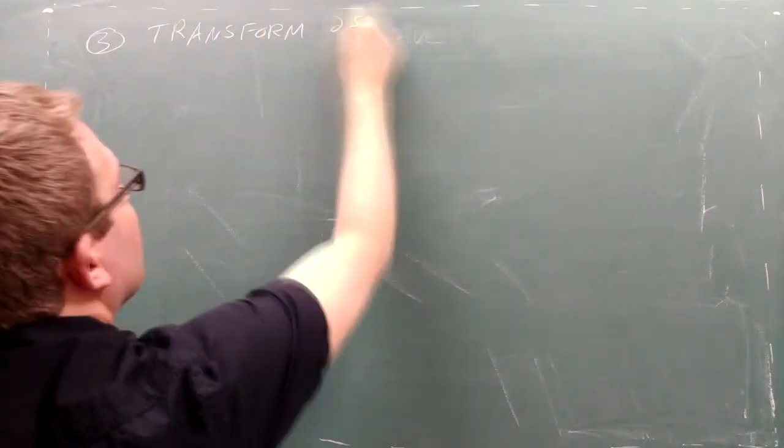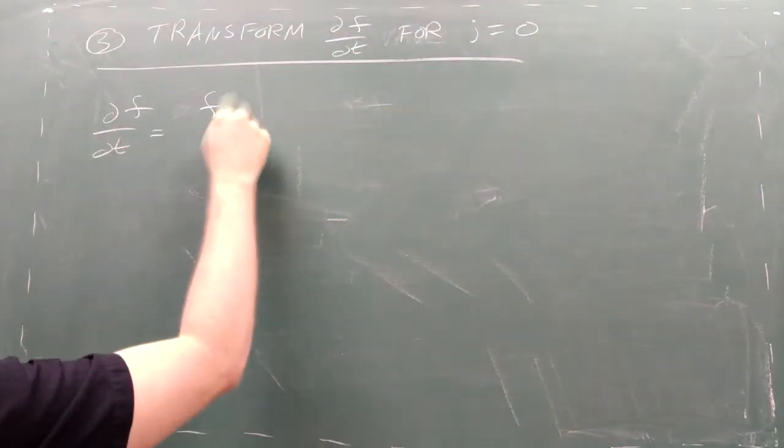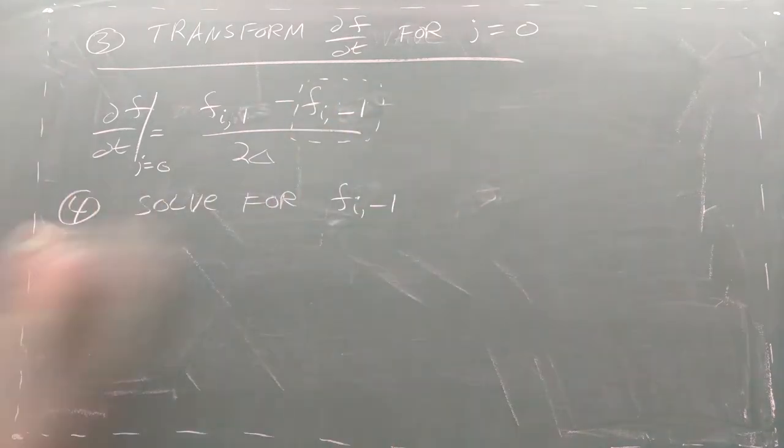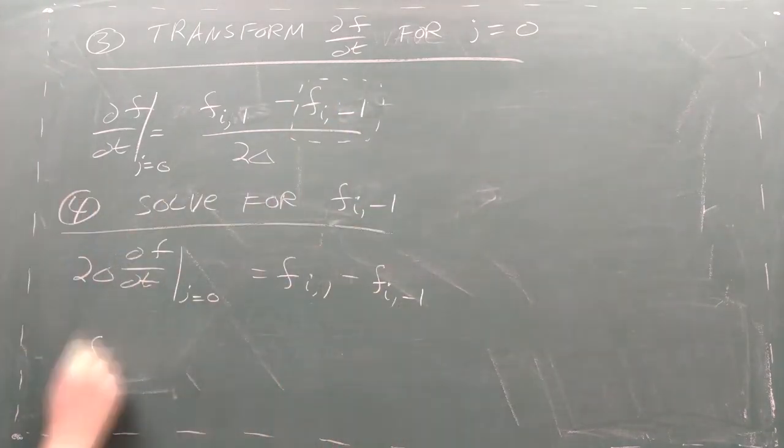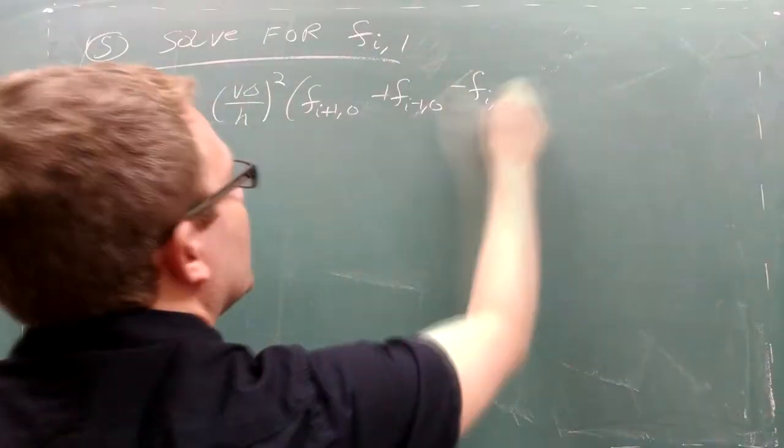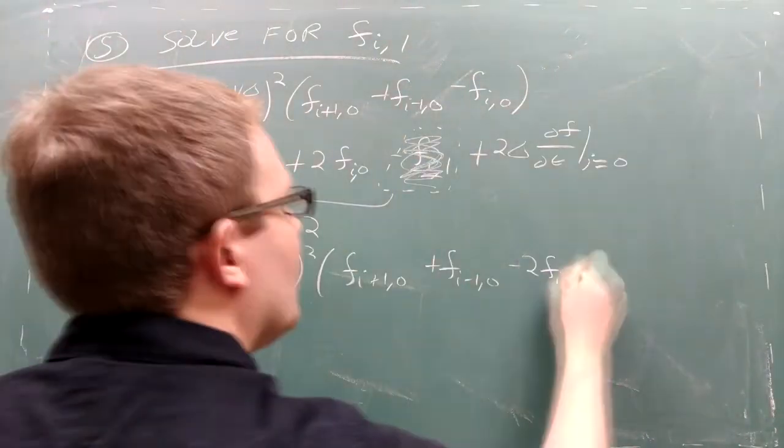In step three, we get around this problem by bringing in the derivative of the shape function at j equals 0. In step four, we solve for the mysterious f. Finally, in step five, we combine our two difference equations to arrive at f.